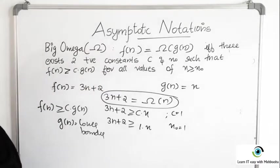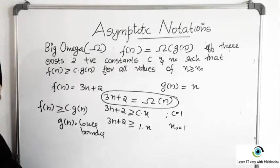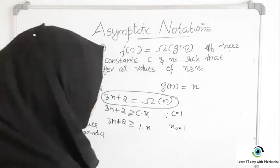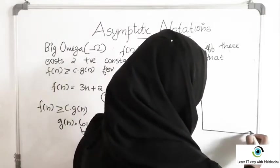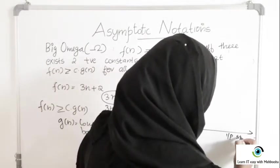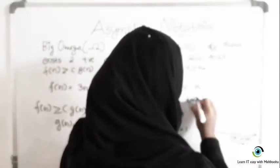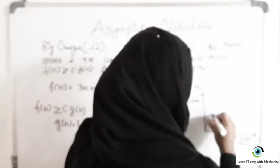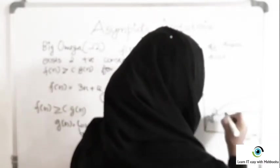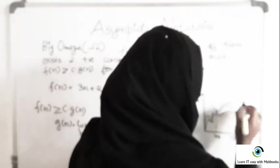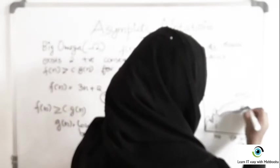This is the minimum time your algorithm can take to run to its completion — not less than that. If you are picturing this, here is the graph showing the growth of functions. You can plot input size N on the X axis and time on the Y axis. If you draw the growth curve, it will look something like this. This is your N0, and beyond this value F of N is always greater than C times G of N.